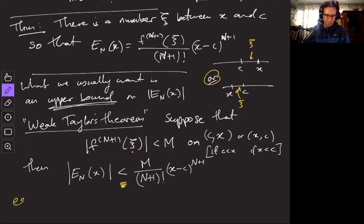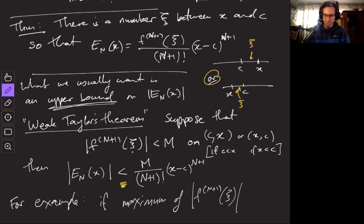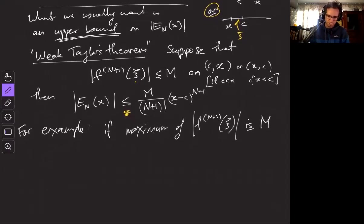So for example, if the maximum of this, probably less than or equal to here, is m, then we can take that number m and take that upper bound.